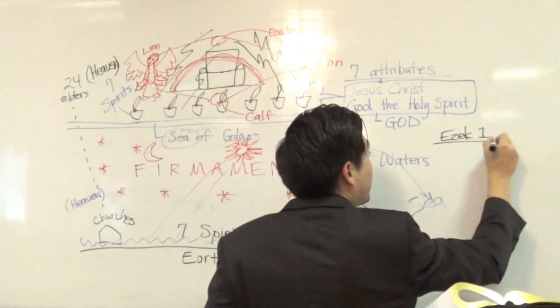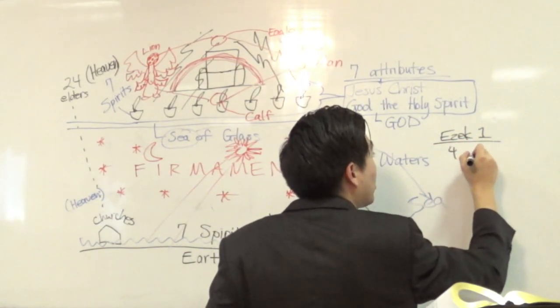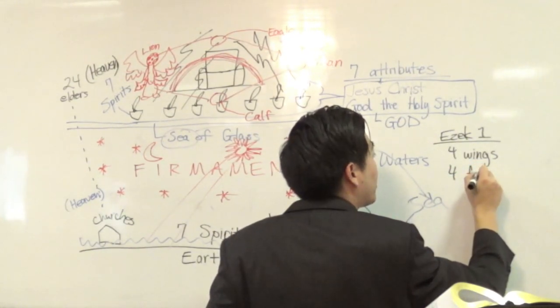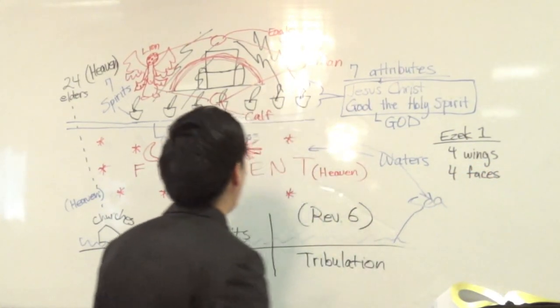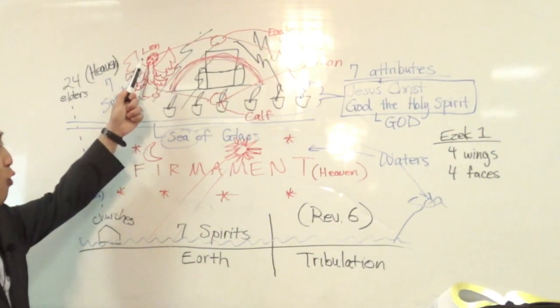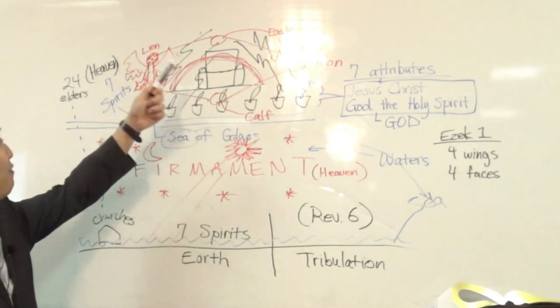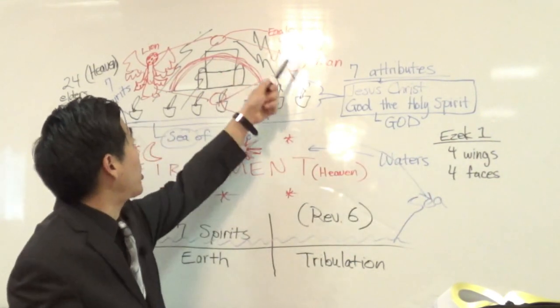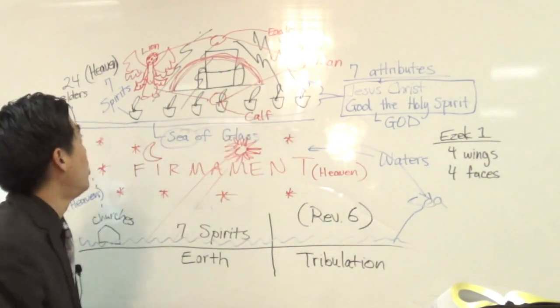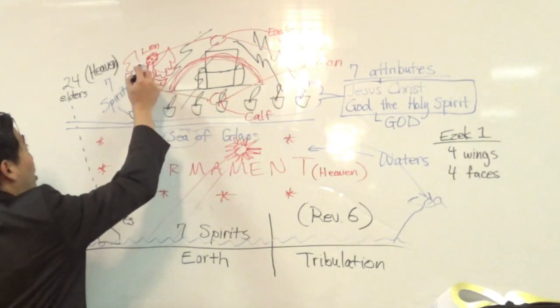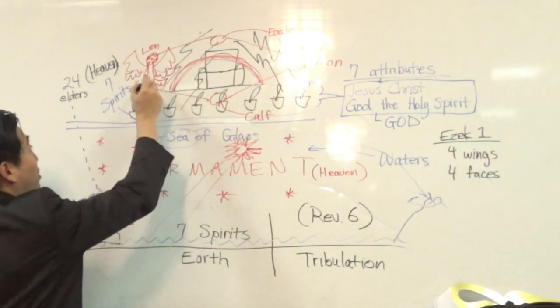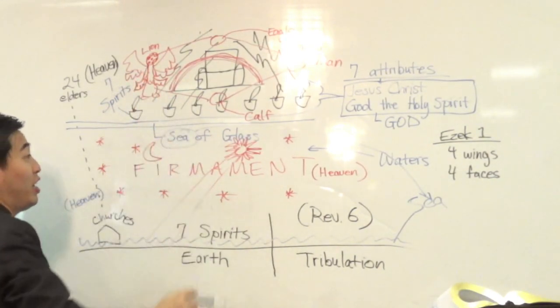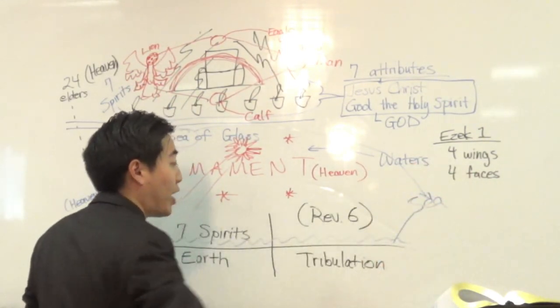Let's look at Ezekiel chapter 1, verse 11. Thus were their faces, and their wings were stretched upward. Two wings of every one were joined one to another, and two covered their bodies. You'll notice right here at verse 6, and everyone had four faces, and everyone had four wings, not six. Ah, there's an error in your King James Bible. So notice Ezekiel chapter 1 says four wings, and here's another contradiction, four faces.